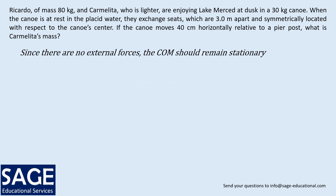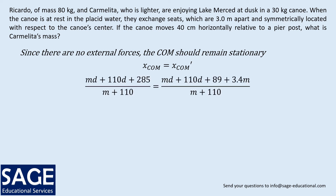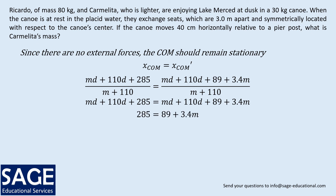Since there are no external forces, the center of mass should remain stationary, meaning x com and x com prime must be equal. We equate the two expressions and solve for m. Multiplying both sides by m plus 110 turns the fractions into a linear expression. Subtracting md and 110d from both sides gives: 285 equals 89 plus 3.4m. Solving this equation gives m equals 57.6 kilograms. That is the mass of Carmelita.